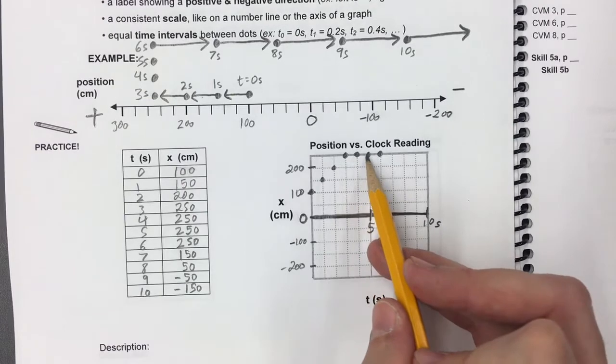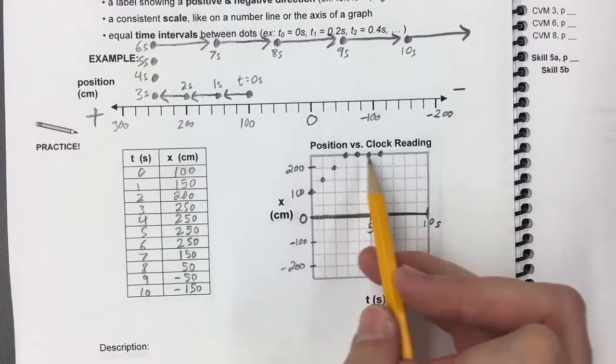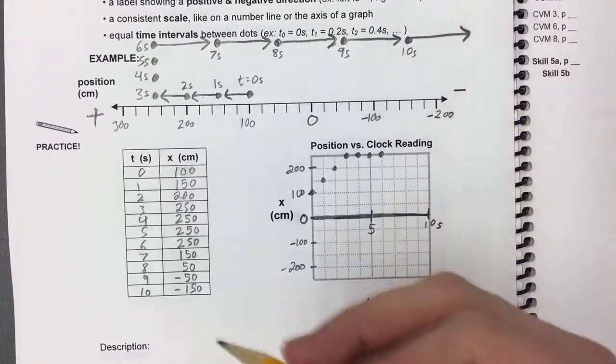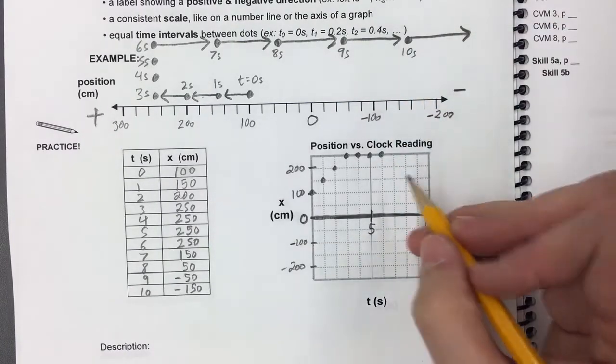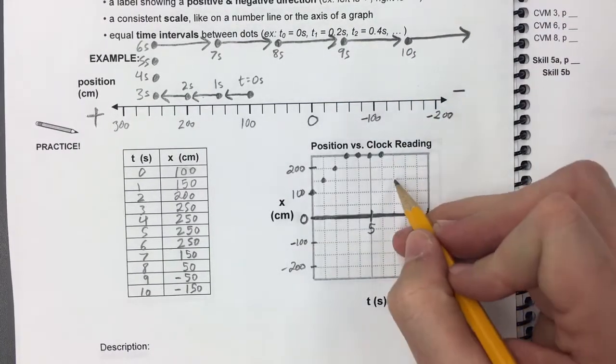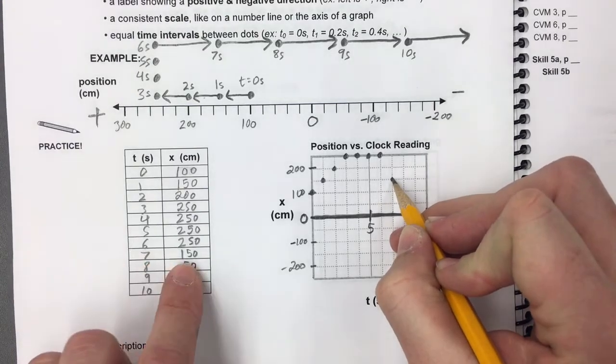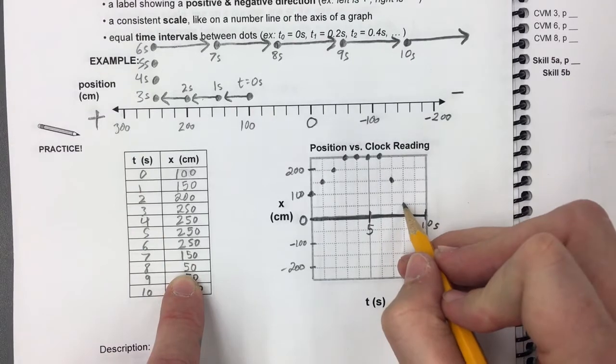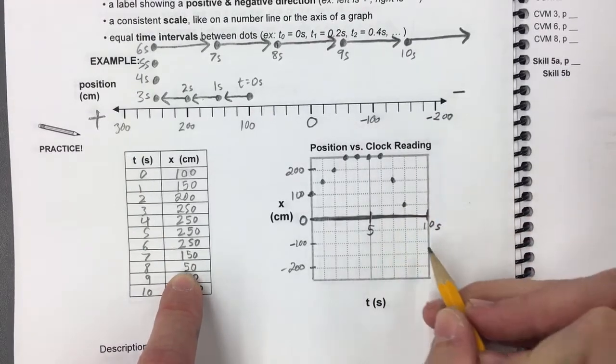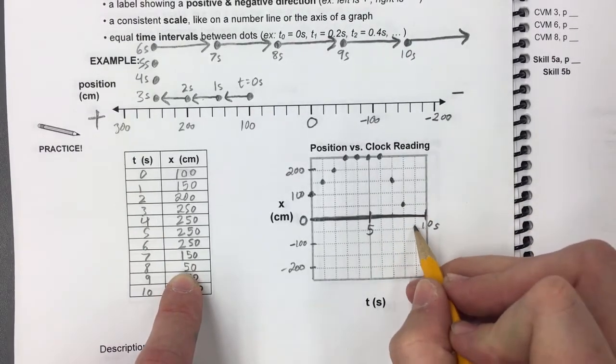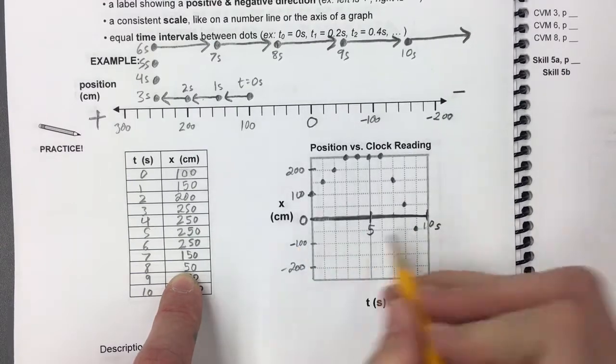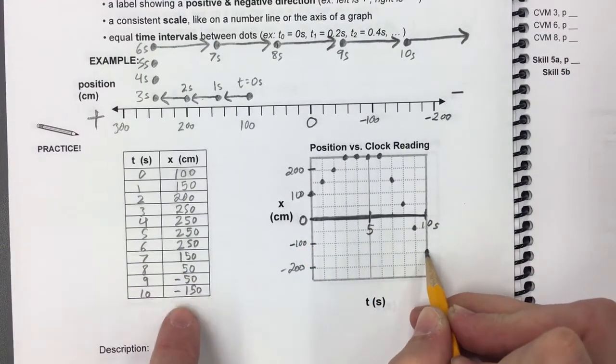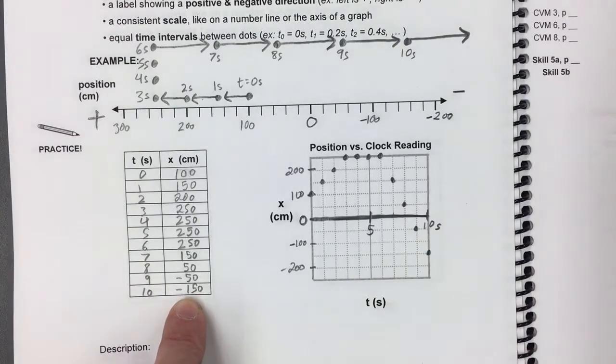So notice this is 250, 250, 250, 250. That position stays constant on that graph. And then the position changes by 100. So for 7 seconds, the value is 150. For 8 seconds, the value is 50. And then notice this is where the graph goes into the negative part of the graph. This position is actually negative 50, and it continues to negative 150.